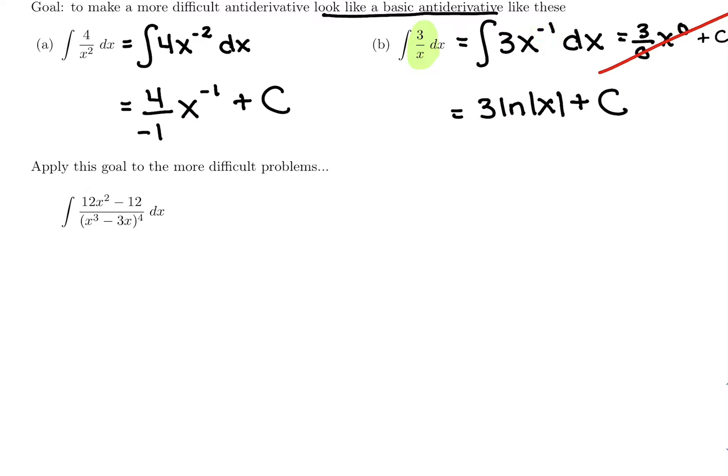So with this one here, where we have u that's going to be in the denominator, we want to keep in mind we may be able to add one to the power, or if we add one and we get 0, we're going to write ln of u as our antiderivative.